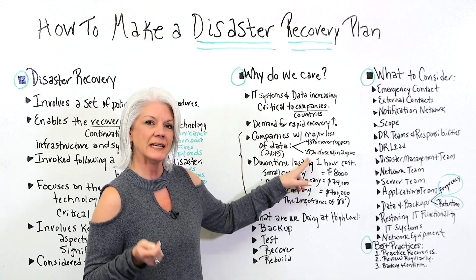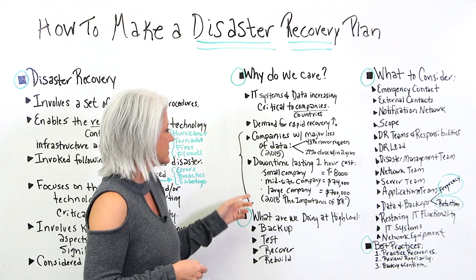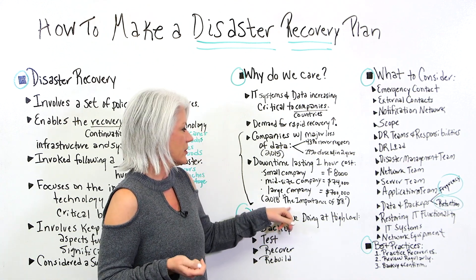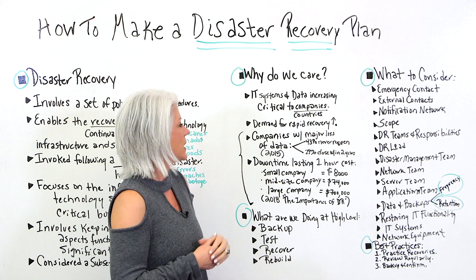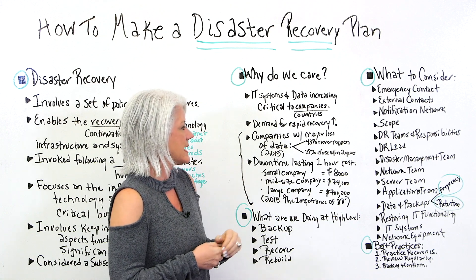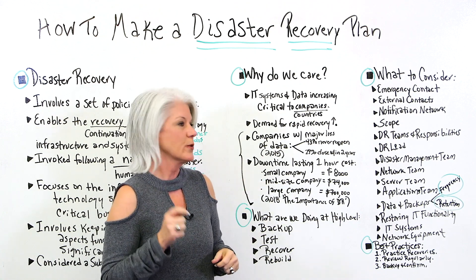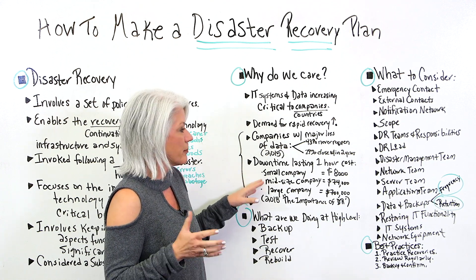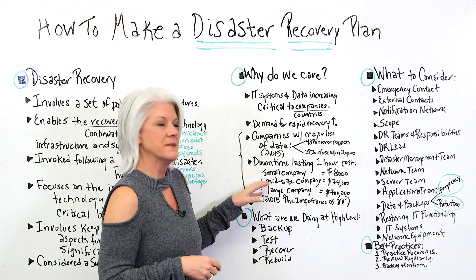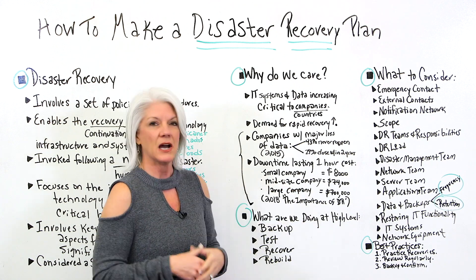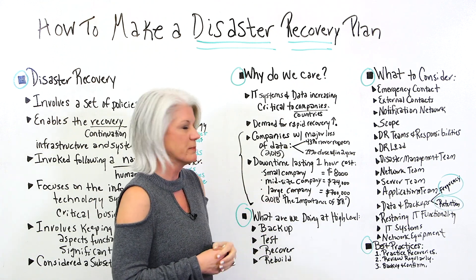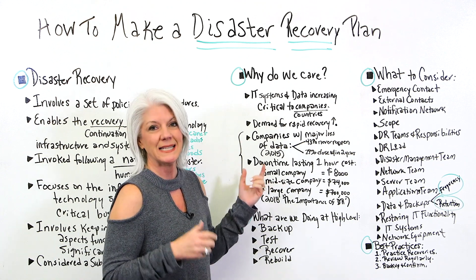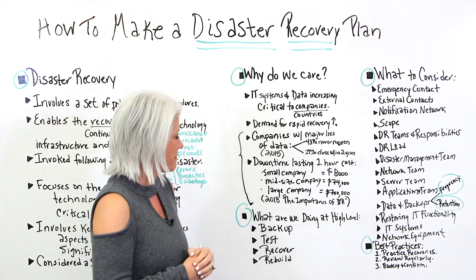29% closed within two years. Also, from 2018, an article titled 'The Importance of Disaster Recovery' suggests that downtime lasting for an hour can cost a small company approximately $8,000, a mid-sized company around $74,000, and a large company up to $700,000. You can see that can be a pretty big impact.